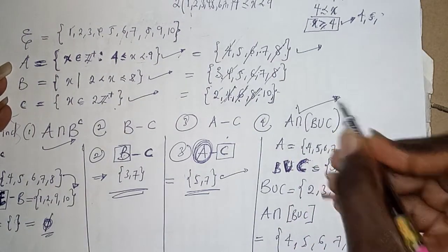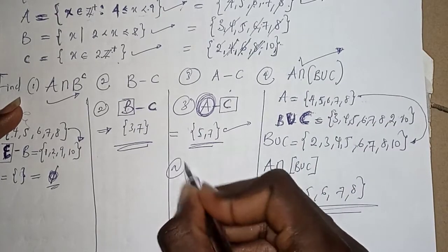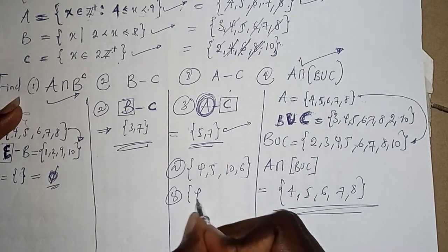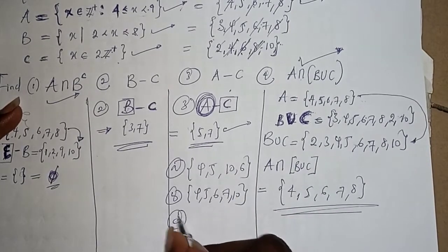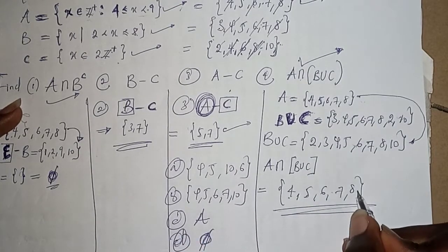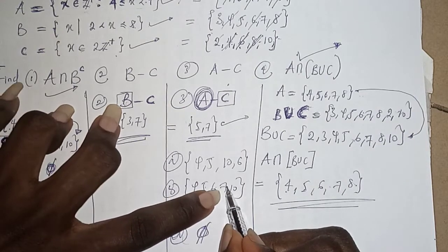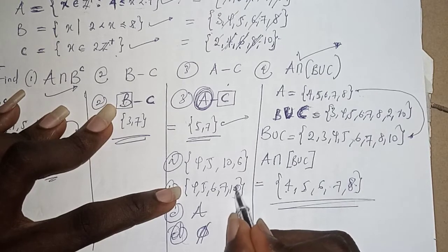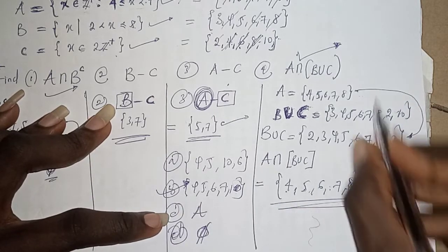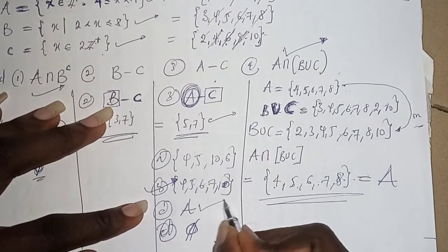In a multiple choice question, you might see options like {4,5,10,6} or {4,5,6,7,10} or just set A or an empty set. You got {4,5,6,7,8} — by checking options, if you see an option with ten but missing eight, you might be tempted to pick it — that would be totally wrong. The intersection is {4,5,6,7,8}, which is equal to set A. So A is the final answer.